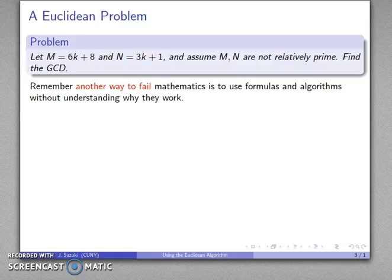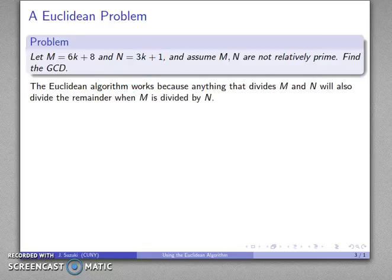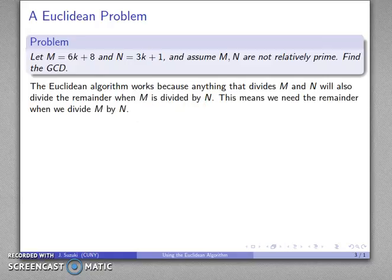Now, again, another way to fail mathematics is to use formulas and algorithms without understanding why they work. So we know how to use the Euclidean algorithm, but it's important to remember why the Euclidean algorithm works. And the reason that it works is that anything that divides both numbers will also divide the remainder when I divide one by the other. That means I'm going to want to take a look at the remainder when we divide m by n.